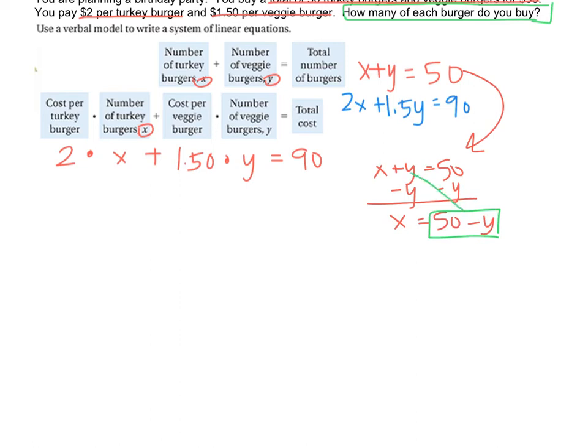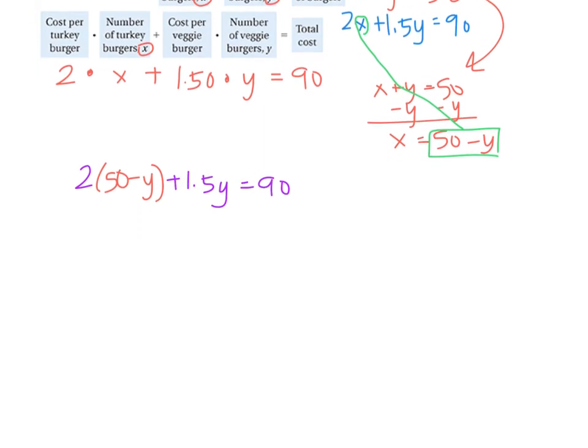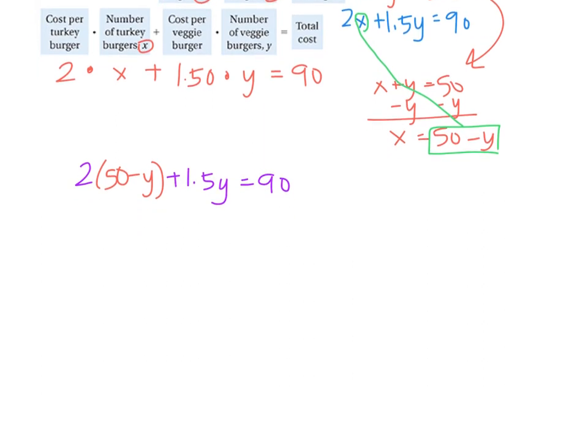Now what I do is I take that 50 minus y and plug it in right here for x in the other equation. I have 2 times 50 minus y, because that's what x equals, plus 1.5y equals 90. So now I just solve it.